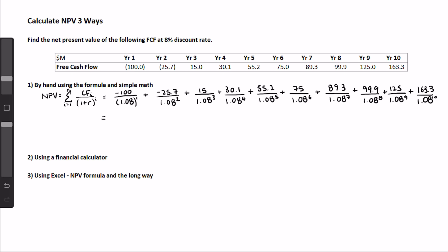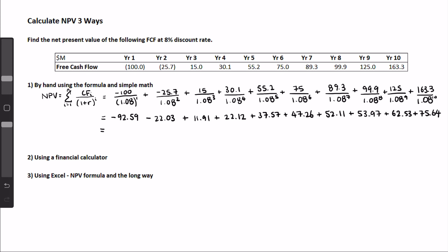Using your calculator, whether it's a regular calculator or on your phone, we can find the simple math for each term. Minus 100 divided by 1.08 is minus 92.59. The second term, minus 25.7 divided by 1.08 squared is minus 22.03. The third term is 15 divided by 1.08 to the power of 3, which is 11.91, and so on, until you get all 10 terms and add them all up. The sum is 248.49 — that's the NPV, or the net present value, in millions.